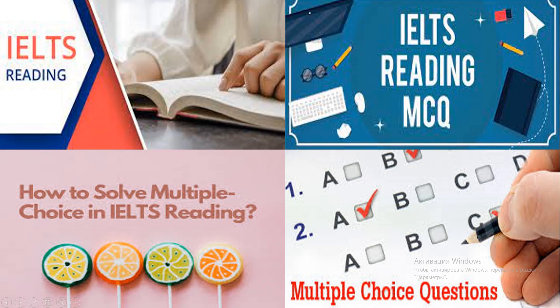With this type of question, you will be able to use a combination of skimming and scanning. First, you will skim the text to locate the relevant place and then read carefully to find the details you need to answer the question. Remember that the key to answering these questions is finding the relevant part of the text very quickly. If you are not sure which paragraph to check, choose a keyword from the question and scan the text for it quickly.